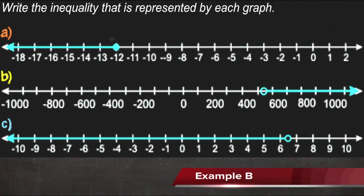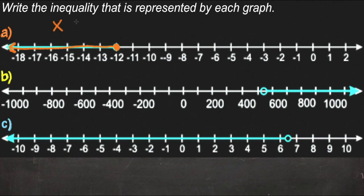So if we're letting our variable be x, then in our first one here, A, negative 12 is graphed—negative 12 and everything smaller than negative 12 is graphed. So x can be anything that's less than or equal to negative 12. It can be negative 12 and it can be anything smaller than that.